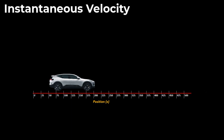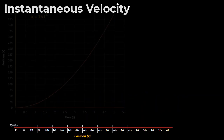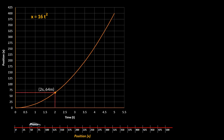Let us say you are in a car and your position is given by the equation x = 16t squared. If you plot a time versus position graph, you get a plot like this. At time t = 2 seconds, you are at x = 64 meters. Then you continue moving ahead and at time t = 4 seconds, you reach x = 256 meters.